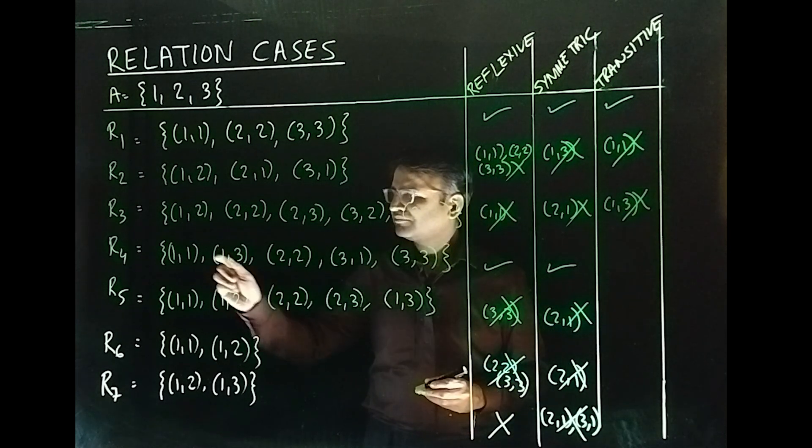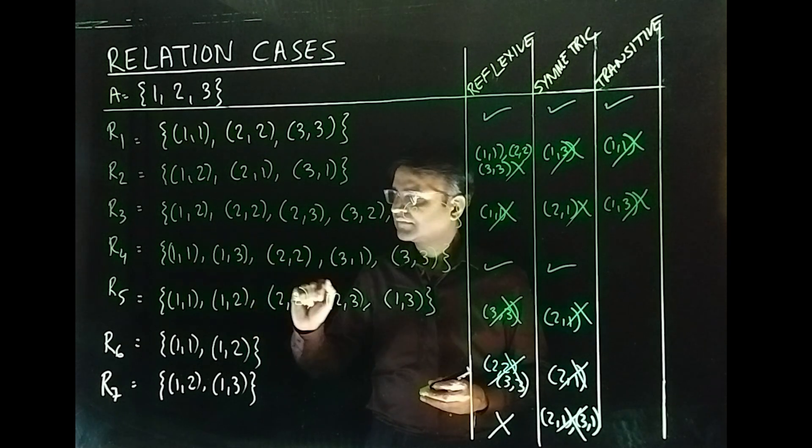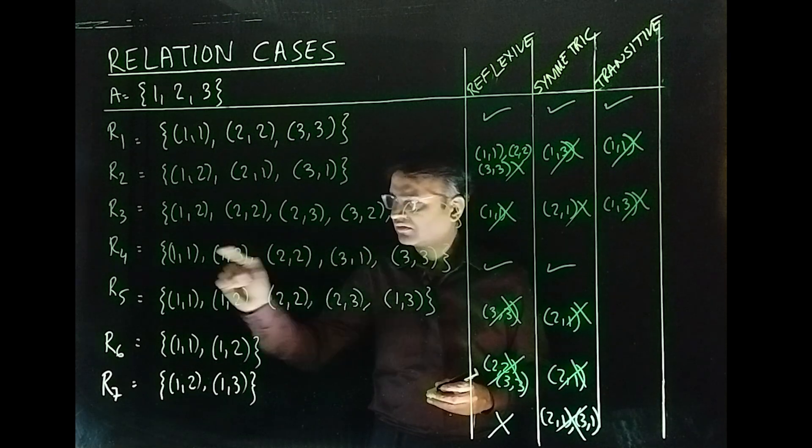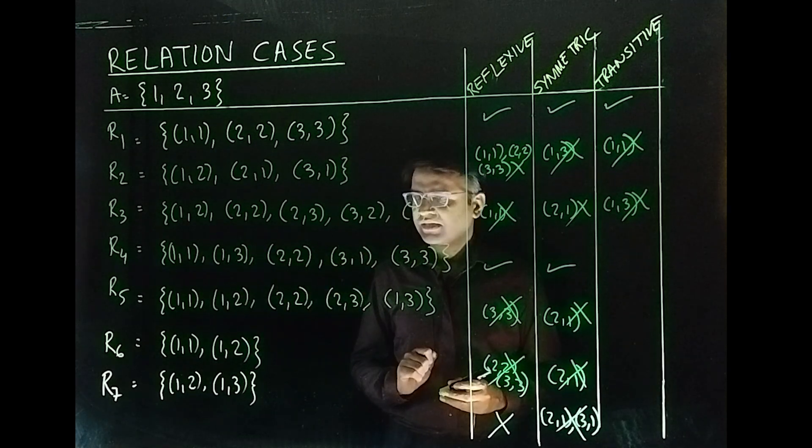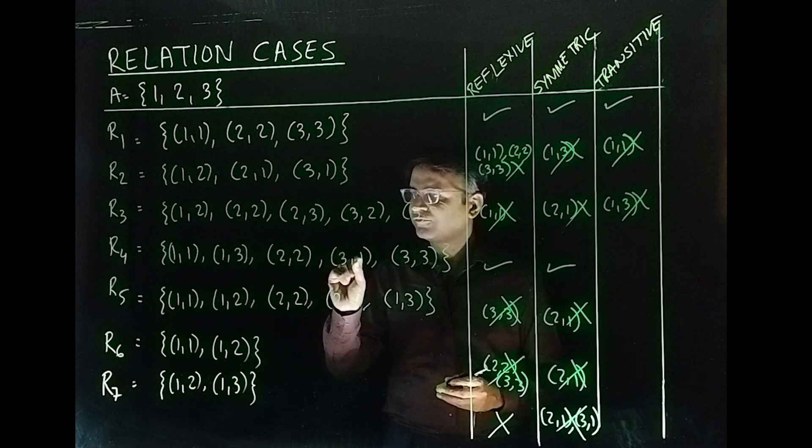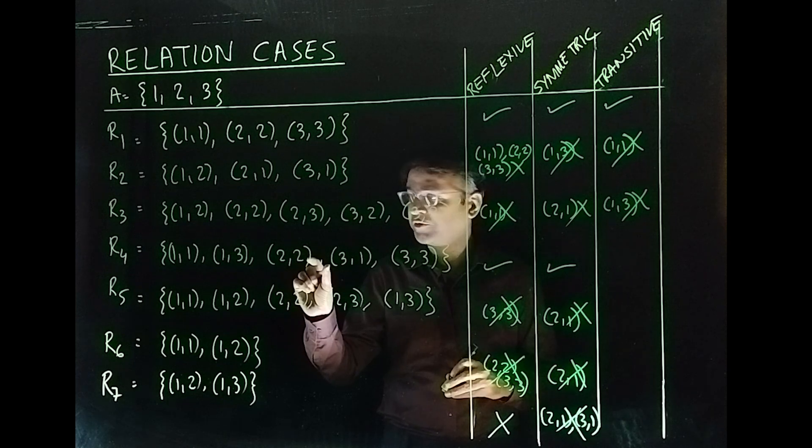How about R₄? We have (1,1), (1,3), (1,3) fine done. (1,3), (3,1), (1,1) done fine. Then we have, we have what (2,2) fine that is transitive in itself as I always told you. Then you have (1,3), (3,3), (1,3) so this is also transitive.